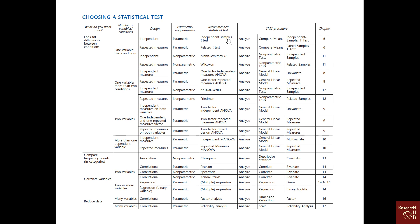For example, if we compare mean expenditure for males and females, data collected once in 2017, and it is normally distributed, we use an independent samples t-test. If the data was collected independently but was not normally distributed, we would use the Mann-Whitney U test.